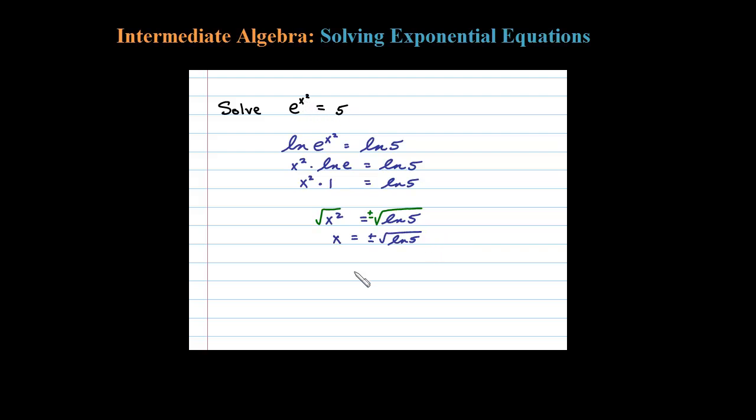Let me write that in set notation. So the solution set would be negative the square root of natural log of 5 and the positive square root of natural log of 5. Two solutions to this.